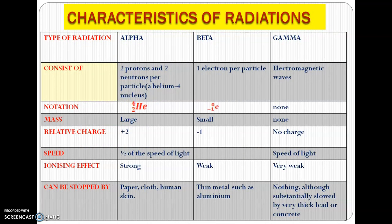The characteristics of these radiations are as follows. For an alpha particle, when it is released from the nucleus, there are two protons and two neutrons that are actually released. What we have is actually a helium particle which is released, denoted by the notation with mass number four and proton number two. It has a large mass, its relative charge is positive two, and it moves at the speed of half the speed of light.